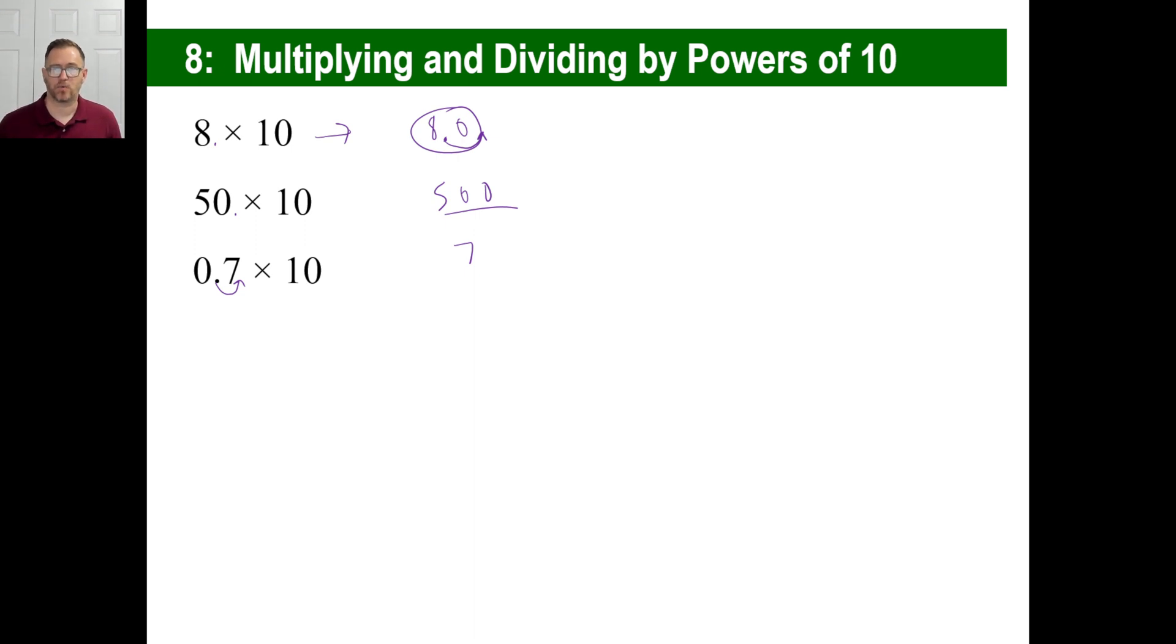When you multiply by powers of 10, in other words, 10, 100, 1,000, 10,000, and so on, all you do is you count the number of zeros there are in the power of 10. And if you're multiplying, you move it over to the right that many times, however many zeros there are. If you're dividing, you go to the left that many times, however many zeros there are. That's it. Please don't sit there and spend 20 minutes with some long multiplication problem. Just do it this way. It's a lot easier.